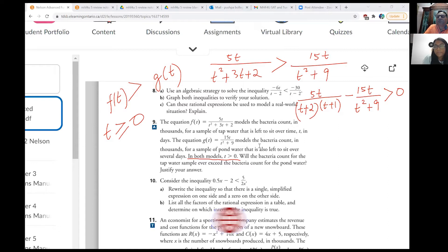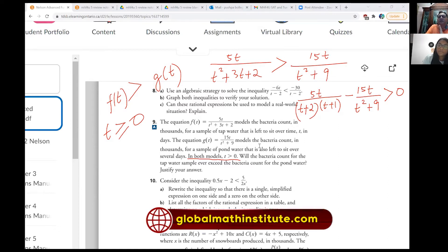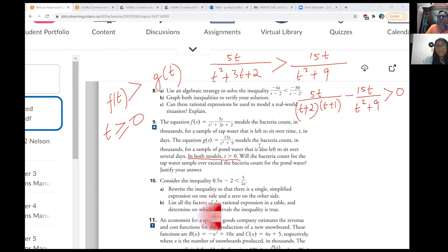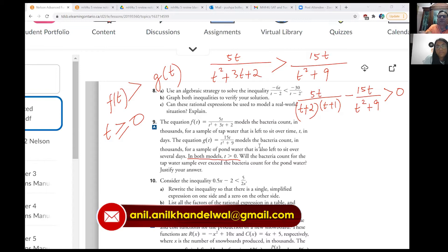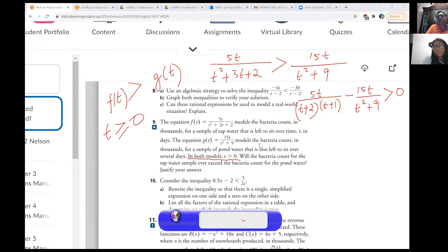So now, as t approaches a very large number, let's try to analyze what happens when t approaches a very large number. If t approaches a very large number, both of them will approach what? See, denominator is of higher degree than numerator. So that means that the horizontal asymptote is 0. Correct? So for a very large number, they are actually approaching 0.